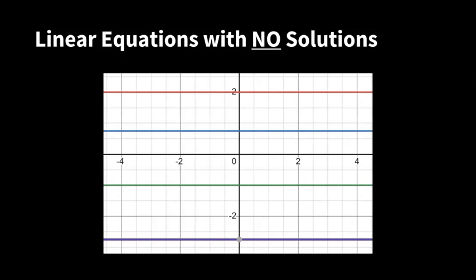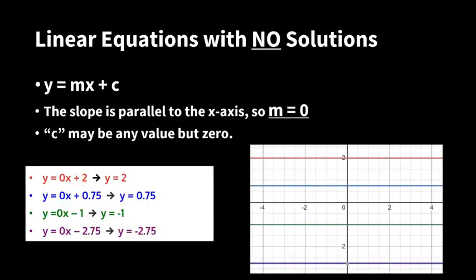Now, what are linear equations with no solutions? These are straight lines parallel to the x-axis that never meet it, so there are no solutions. The conditions are: the slope must equal 0 (m equals 0) and c may be any value except 0. For example, y equals 2, y equals 0.75, y equals minus 1, and y equals minus 2.75 — none of them meet the x-axis, so there are no solutions.